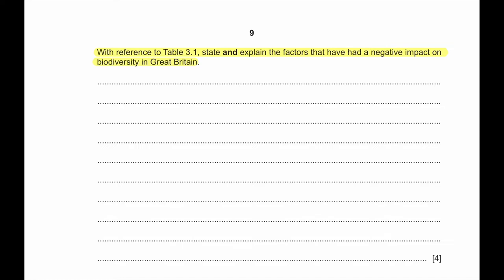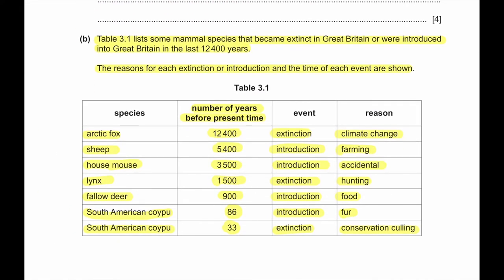With reference to table 3.1, state and explain the factors that have had a negative impact on biodiversity in Britain. Climate change due to global warming - Arctic fox species are not well adapted to climate change, so they got extinct. Hunting caused extinction of the lynx, as we can see the lynx got extinct because of hunting. Introduction of farming animals like sheep decreases biodiversity as they can destroy food webs due to overgrazing. Introduced species also compete with native species as they might occupy the same niche.